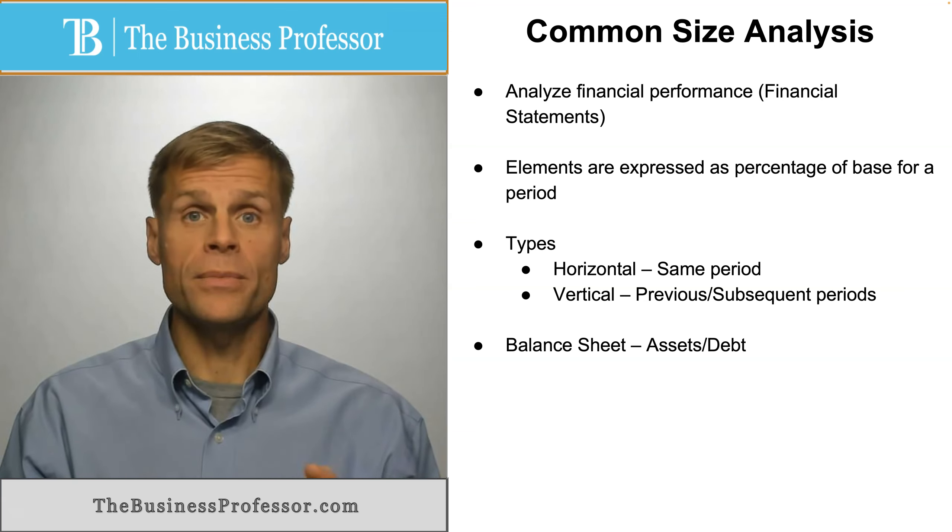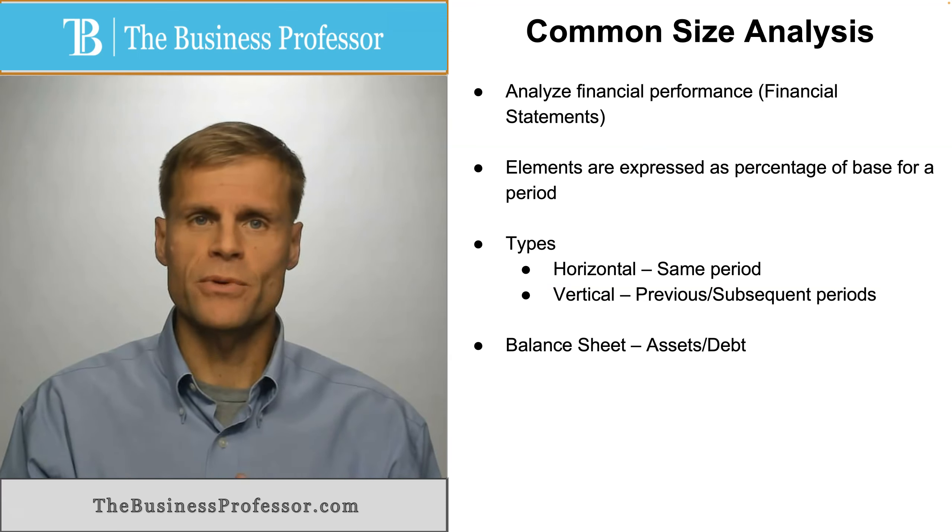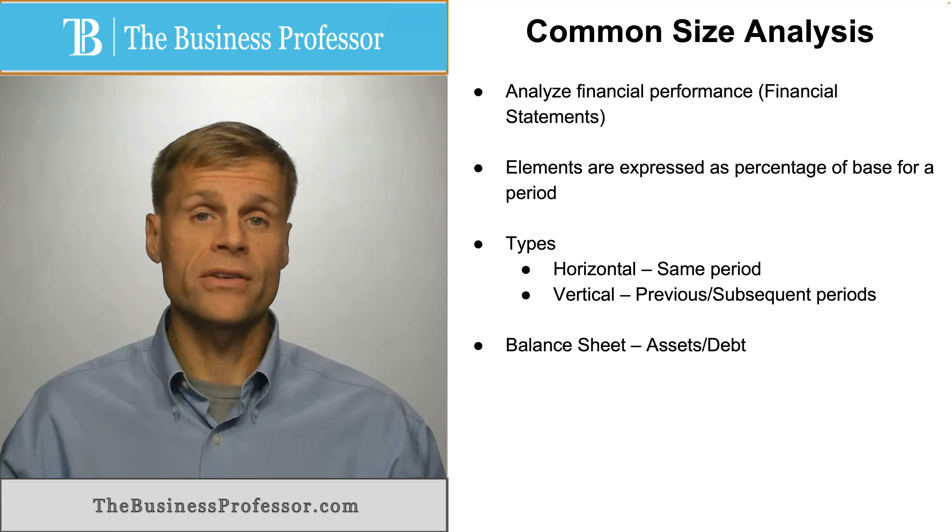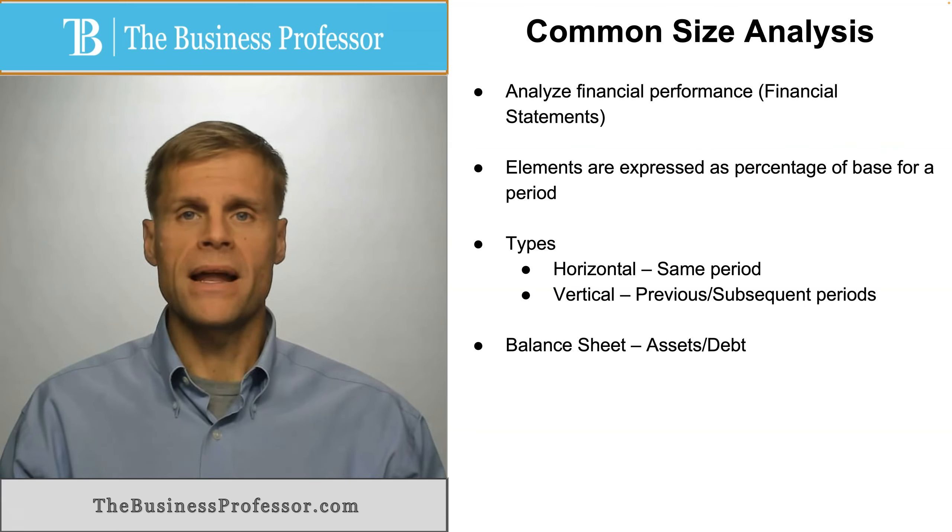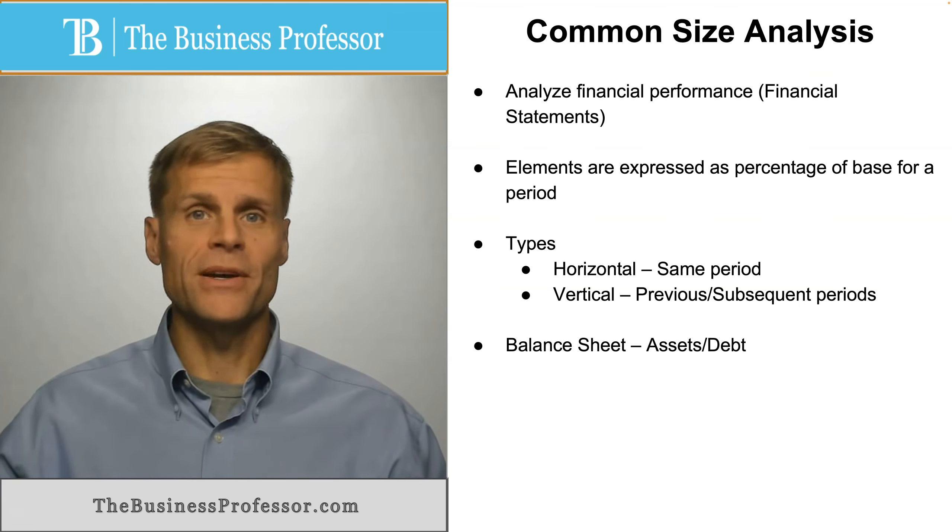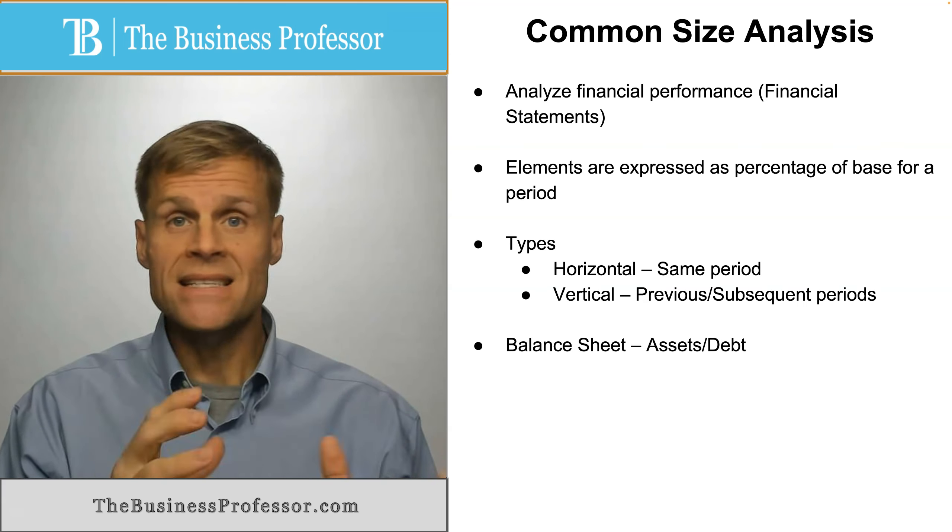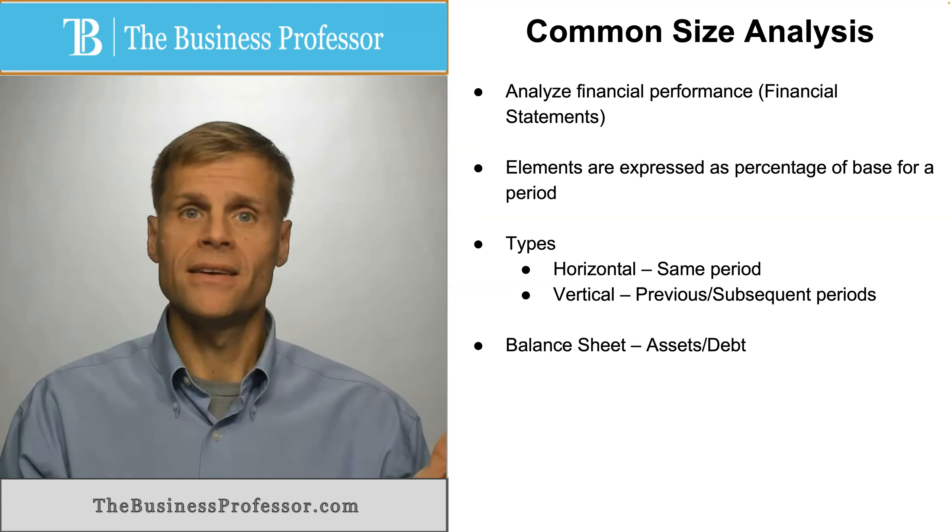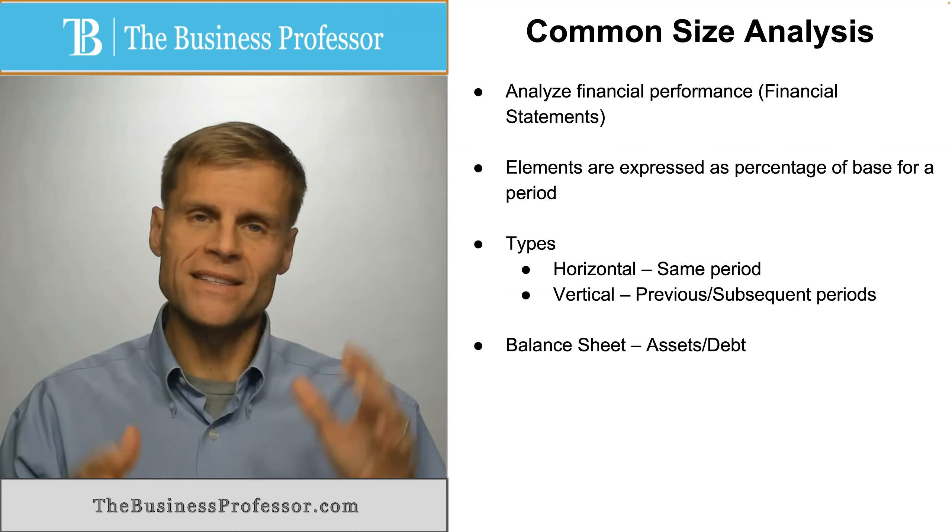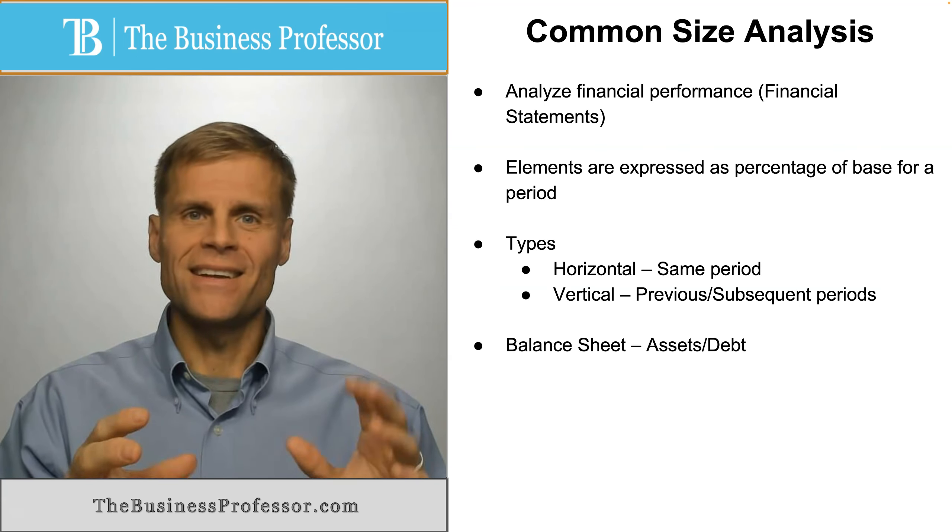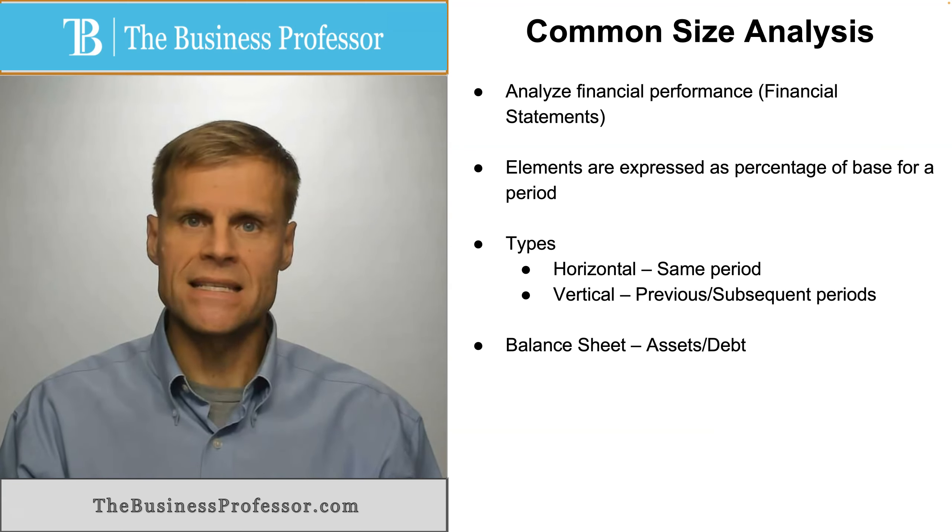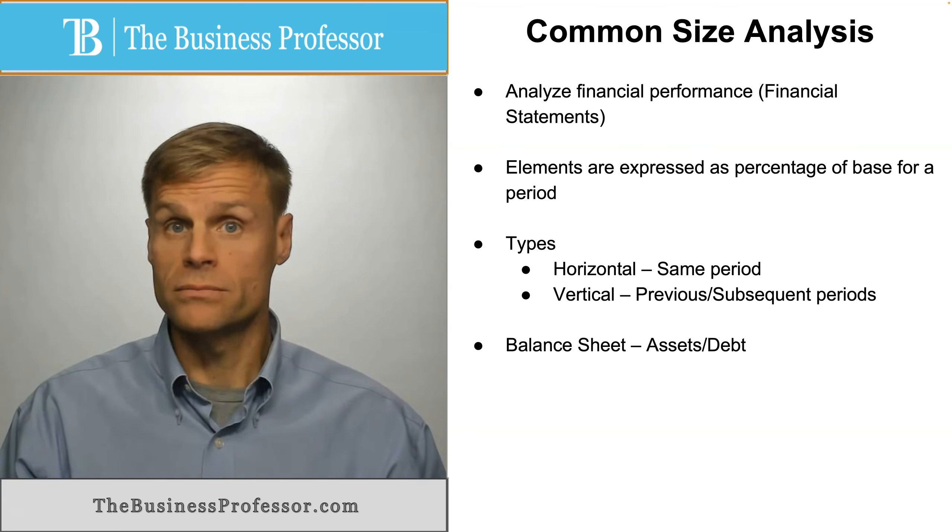A small company may have a million dollars worth of assets and $500,000 worth of debts, where a mega company might have a billion dollars in assets and $500 million in debts. That metric if you compared debt to asset ratio would be the same between the two companies because the percentage is the same. So you're putting them on equal footing in this regard.